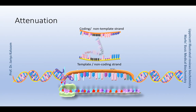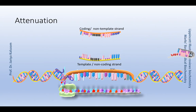Repression by tryptophan is not always complete. Therefore, the tryptophan operon is also regulated by attenuation. During attenuation, transcription is started but terminated before completion. When tryptophan has been synthesized in abundance, the process of transcription that started before tryptophan was able to repress it is attenuated by formation of an attenuator, which is a hairpin-like loop structure similar to rho-independent termination of transcription in prokaryotes.